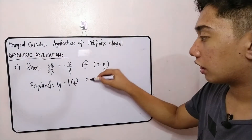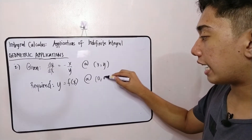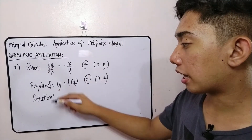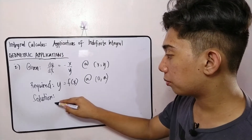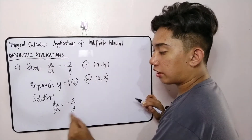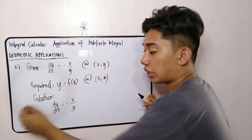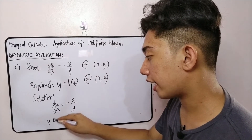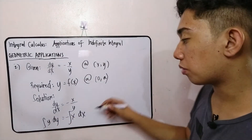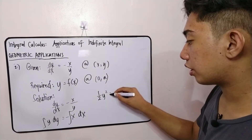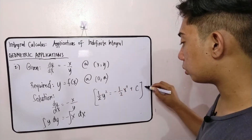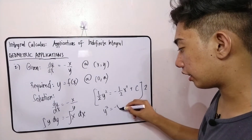We again use variable separable differential equation. Since x and y are separable, we cross-multiply: y dy equals negative x dx. Integrating both sides: one-half y² equals negative one-half x² plus c. Multiplying both sides by 2: y² equals negative x² plus c. Transposing, this becomes x² plus y² equals c — which is the familiar equation of a circle centered at the origin.